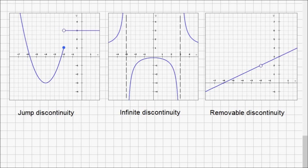For the infinite discontinuity, we have vertical asymptotes. We are familiar with these—rational functions usually have this kind of behavior.